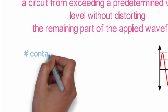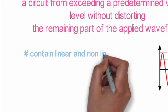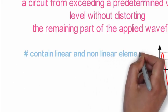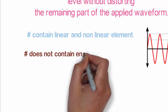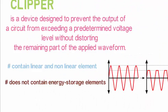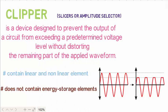Here the clipping circuit consists of linear elements like resistors and non-linear elements like junction diodes or transistors. But a point to be noted here is it does not contain energy storage elements like capacitors. So we can call clipping circuits as slicers and amplitude selectors also.